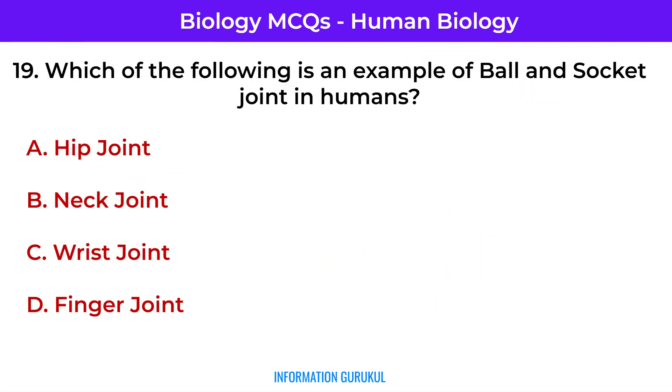Which of the following is an example of a ball and socket joint in humans? Hip joint.